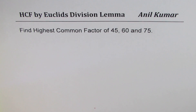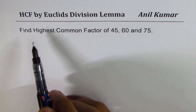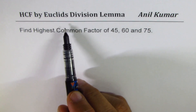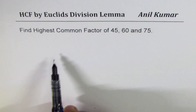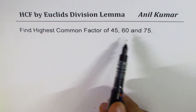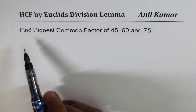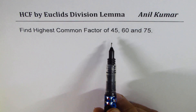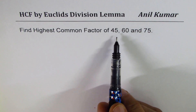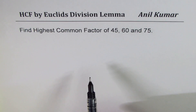I'm Anil Kumar and in this video we'll find the highest common factor by Euclid's division lemma. We'll take three numbers to practice in this particular video. The question here is: find the highest common factor of 45, 60, and 75.